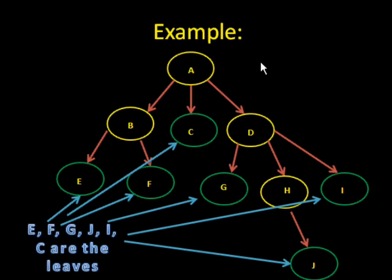And E, F, G, J, I, and C are all leaves of the tree. Leaves means that they are nodes that do not branch out any further. If it did branch out to something else, then you would think of it as a branch. But if it doesn't branch anywhere else, then that's like the end of the branch, which on a real tree would be like a leaf.